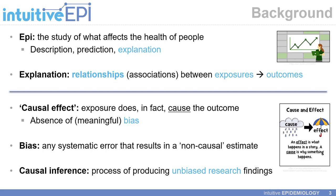Explanation, the focus of this video, relates to the examination of relationships or associations between exposures and outcomes. If we are able to estimate a causal effect from our epidemiological study — which is an effect estimated in the absence of bias — we are able to say that the exposure does in fact cause, or in some cases prevent, the outcome.